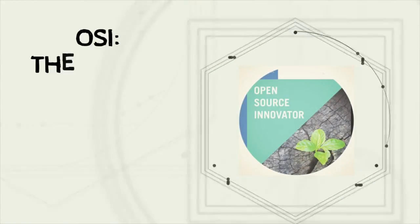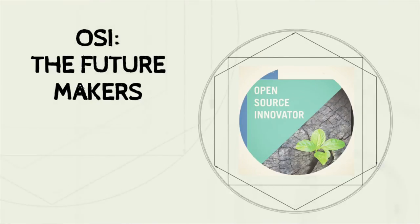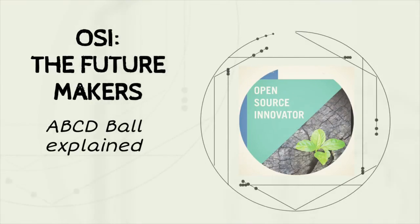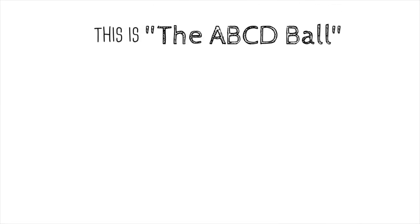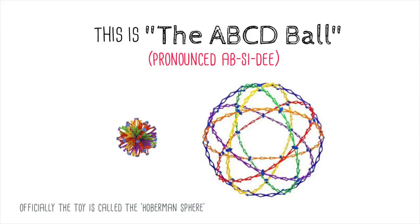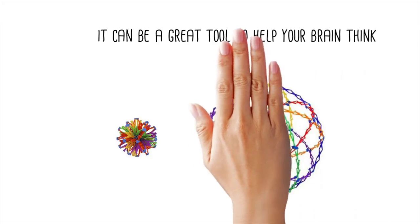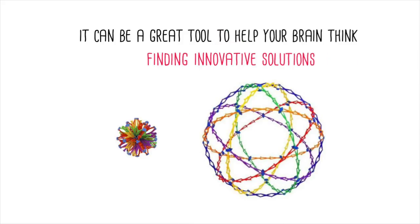Welcome to OSI the Future Maker. This is the ABSDEE Ball, pronounced 'ABSDEE.' Officially, the toy is called the Hoberman Sphere. It can be a great tool to help your brain think.